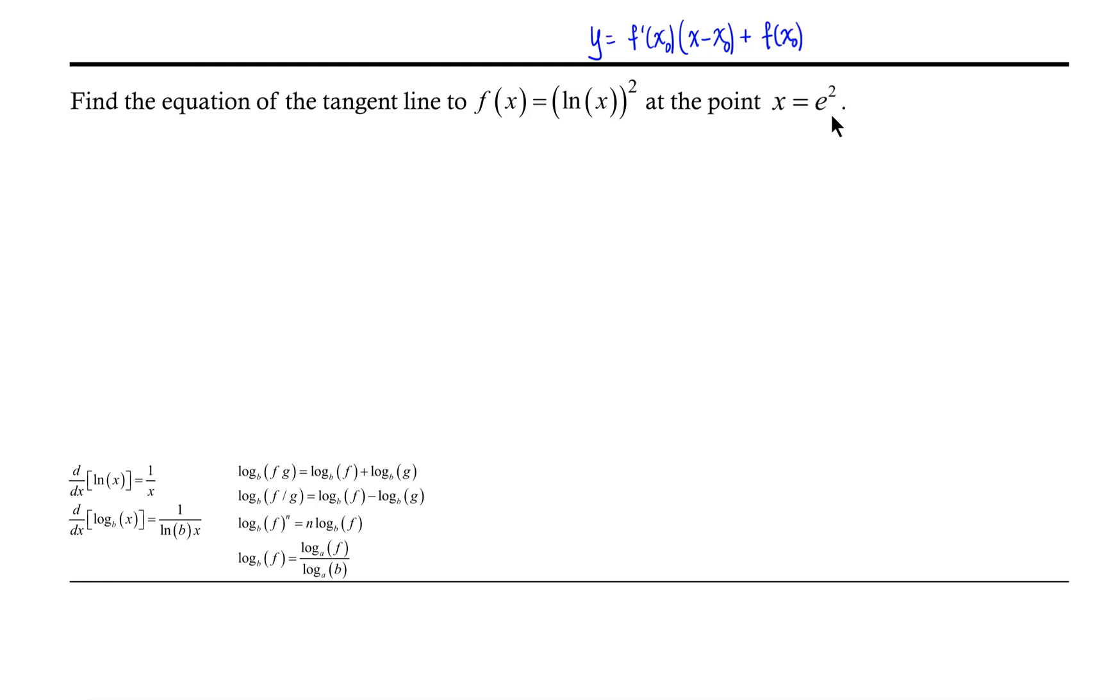Looking at the information we have here, we see that our specified x value is x = e². So we know what x naught is, and what we need to do is find what f'(x₀) is and what f(x₀) is.